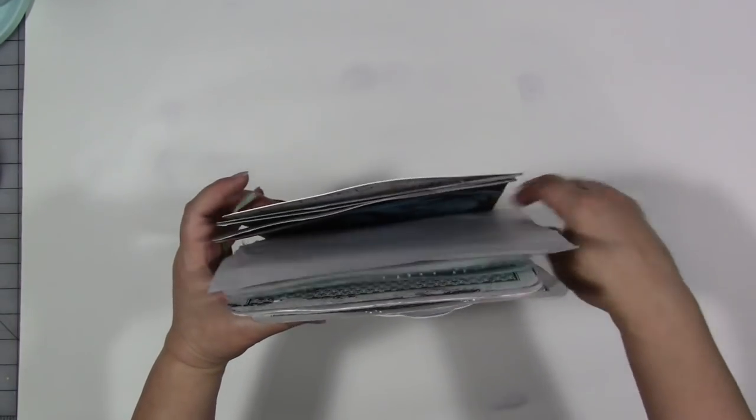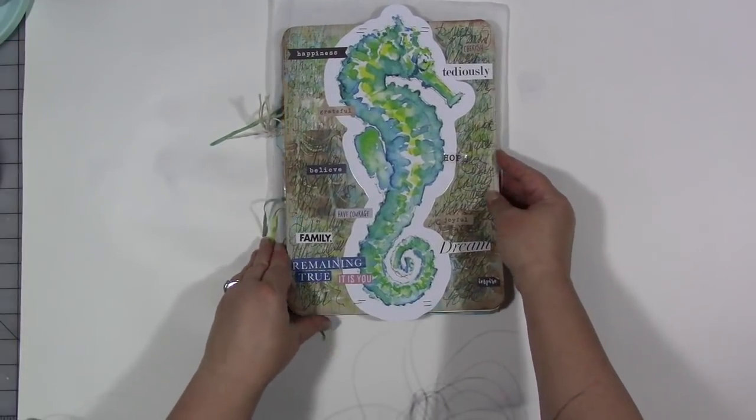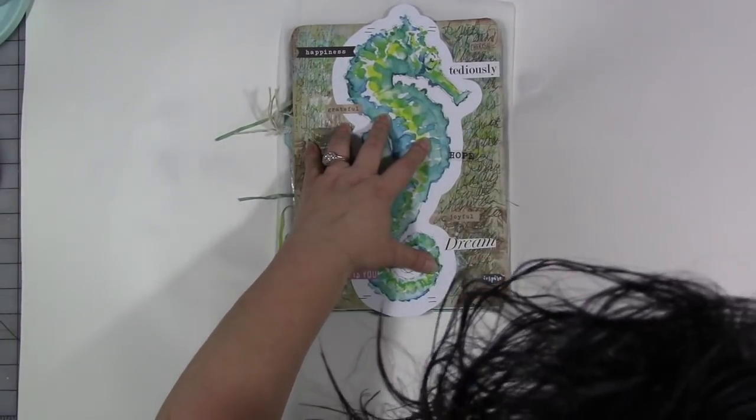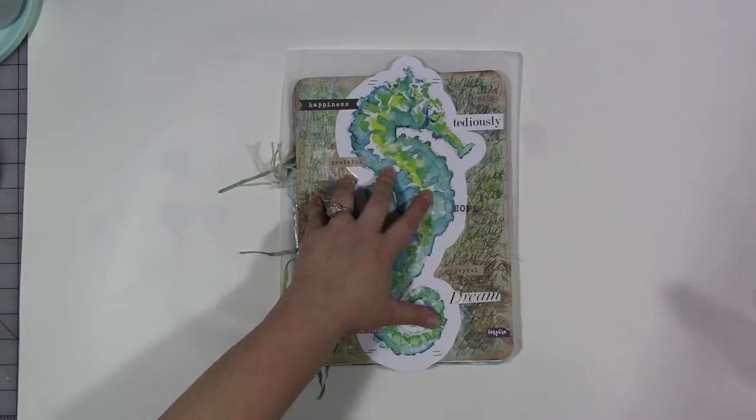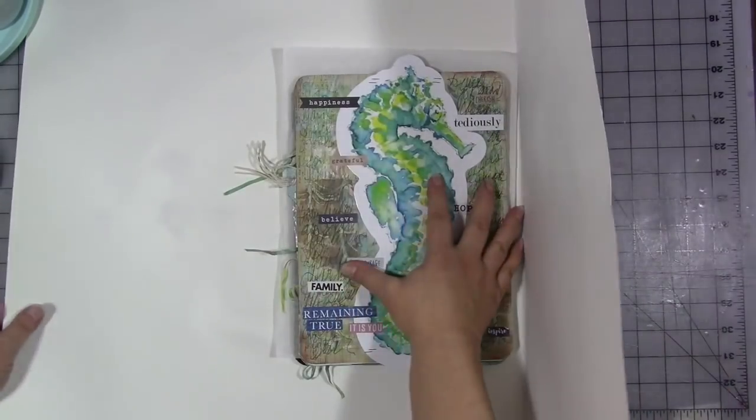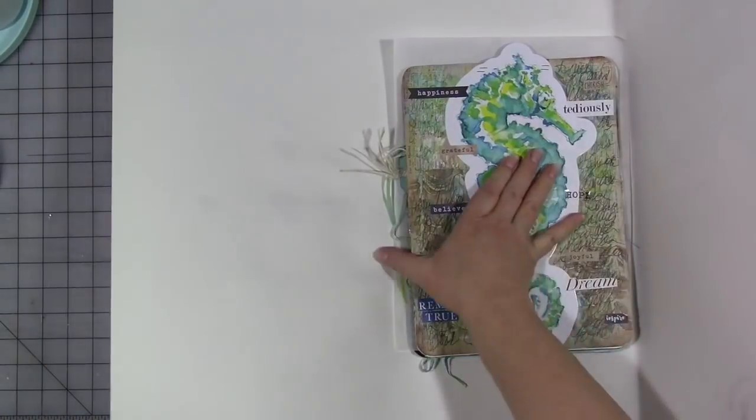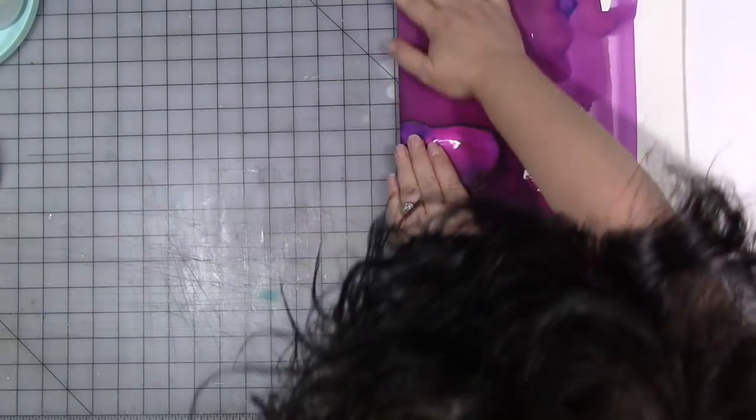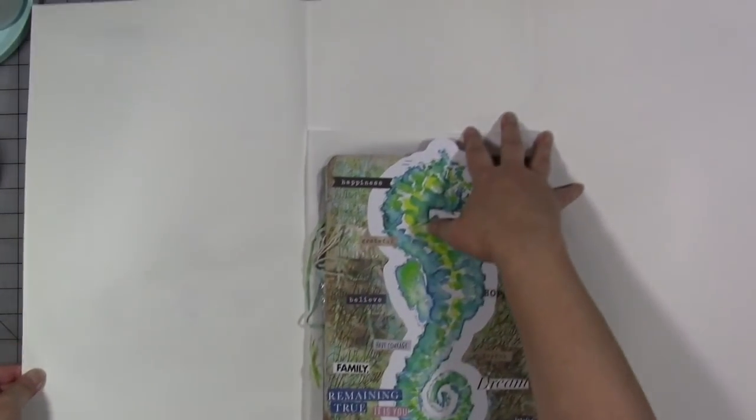I'm going to stack my cards neatly again and I'm going to just eyeball it and put them approximately in the middle of the paper and then I'm going to fold the sides in hopefully. Okay and then give it a crease and then do the same to the other side and then I'm also going to do it to the top and the bottom.